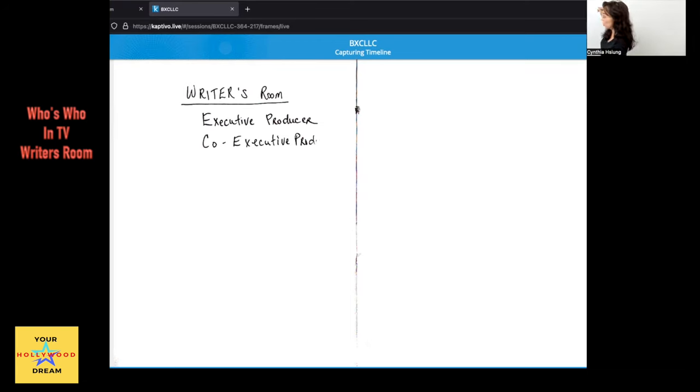Then there would be an assortment of other producers. Now all of these titles, by the way, you will likely see when you're looking at opening credits and/or end credits. Sometimes they put them on either side. You might notice that there are a lot of producers, and some of them are not going to be writers room producers. You may have people who have titles like producer, co-producer, etc. who never really are in the writer's room, but they have that credit for various reasons.